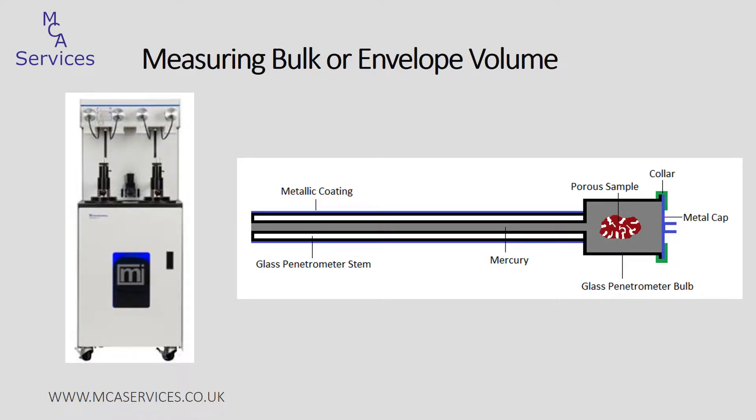There are a few different techniques that can be used for measuring bulk density, and at MCA we use our Micromeritics Autopore mercury porosimetry. This is used to evacuate the sample held within a penetrometer and then backfill it with mercury. We do have three videos on our YouTube channel showing mercury porosimetry, so if you're not familiar with the technique do have a quick look at them, as these show the sample being loaded into a penetrometer and how the instrument itself is used.